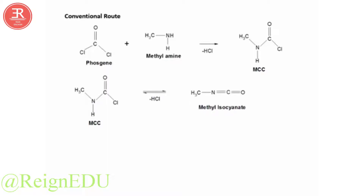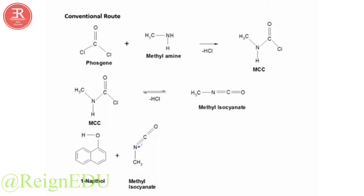Methyl isocyanate was the gas responsible for the Bhopal gas tragedy. This methyl isocyanate is treated with 1-naphthol. Electrons on the oxygen attack the positively charged carbon, the electron density moves onto the nitrogen, and the negatively charged nitrogen abstracts the hydrogen atom. The lone pair of oxygen is retained. This is how we get the final product known as carbaryl.